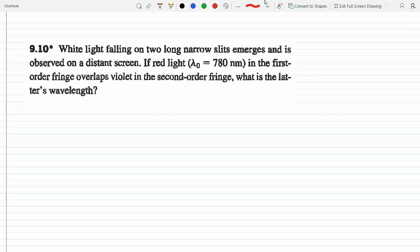What's the violet's wavelength? Okay, so when the red light in the first order fringe, that's m equals one, overlaps violet in the second order fringe...